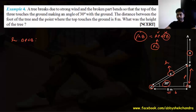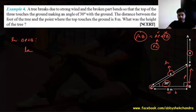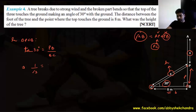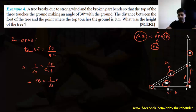In triangle PCB, with respect to 30 degrees, PB is the perpendicular and BC is the base. The trigonometric ratio relating perpendicular and base is tan theta. Tan 30 degrees equals PB by BC. Tan 30 is 1 by root 3, and BC is 8 meters, so PB equals 8 by root 3 meters.